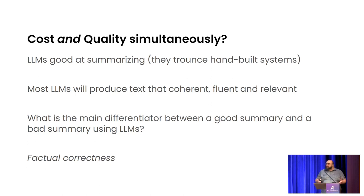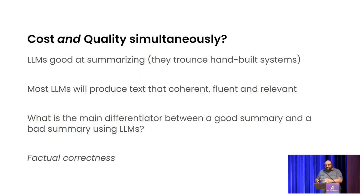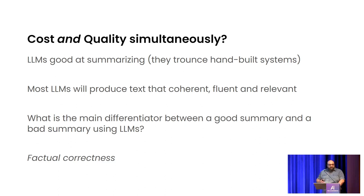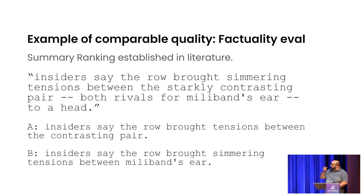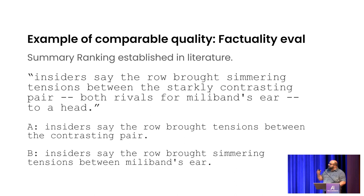Is it possible to save a bucket load of money while simultaneously retaining quality? Most LLMs are actually pretty good at summarization. When GPT-3 came out, it basically out-of-the-box trumped all of the summarization techniques invented up until that time. They're so good that generally you can rely on them for coherent, fluent, relevant text. But the key differentiator is actual factual correctness — is this summary faithful factually to what it's summarizing? Here's an established academic technique for determining how accurate LLMs are in factual correctness.